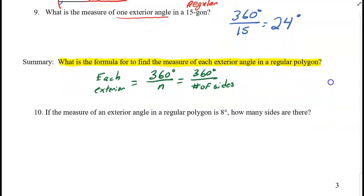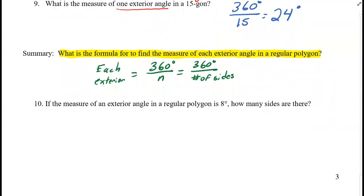Look at another example at the bottom of this page, number 10. If the measure of each exterior angle in a regular polygon is 8, how many sides are there?